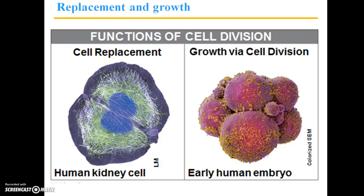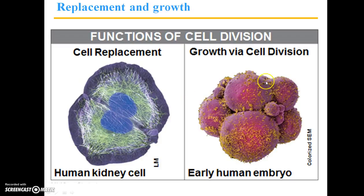Here are just a couple of visual representations of functions of cell division. For example, this is a human kidney cell undergoing mitosis. You can see the nuclear material is somewhat split down the middle, so this is in the process of becoming two cells from one parent cell. And then this is an example of growth via cell division — in this case, we have an early human embryo, and these are individual cells. It's a very early human embryo that has just started to divide.